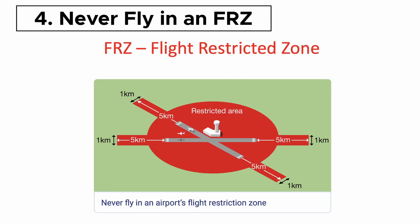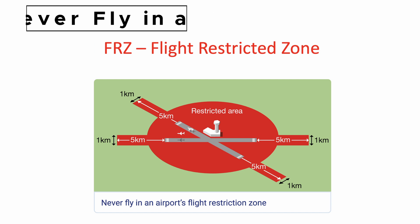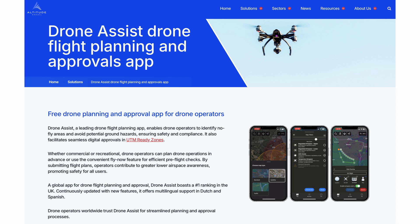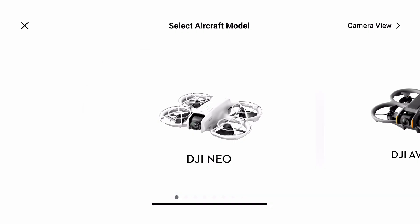Number four is never fly in an FRZ — a Flight Restricted Zone. This is not just limited to airports; it includes prisons, military establishments, royal palaces, and stadiums. You can download an app to your phone — either Android or iOS — from Altitude Angel, called Drone Assist, which tells you where you can and can't fly.